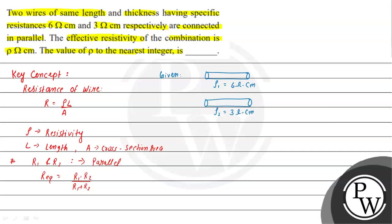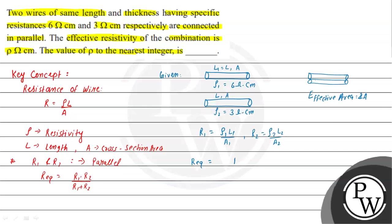Both wires are connected in parallel, and since they have the same length L and the same cross-sectional area A, we can write R1 = ρ1·L/A and R2 = ρ2·L/A. With R1 and R2 in parallel, the equivalent resistance is R1·R2 divided by R1 plus R2.